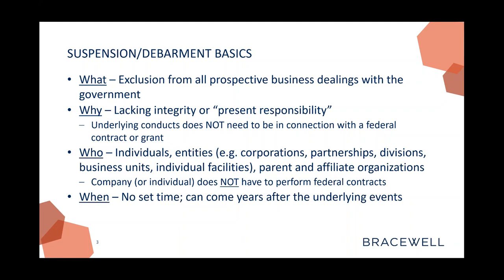So why does this happen? It comes down to lacking present responsibility. Before entering into an agreement with a prospective offeror, the government has to make an affirmative determination that the contractor is presently responsible. That includes the financial wherewithal and facilities to perform the work, but also an affirmative determination that the contractor has a satisfactory record of integrity and business ethics. Importantly, the underlying conduct does not need to be in connection with a federal grant or federal contract. Suspension and debarment can apply to individuals as well as entities — corporations, partnerships, divisions, and affiliate organizations.